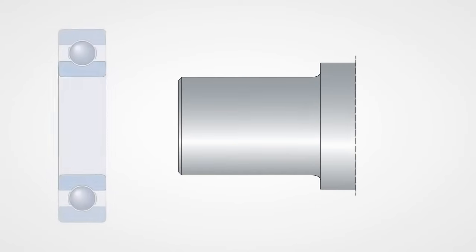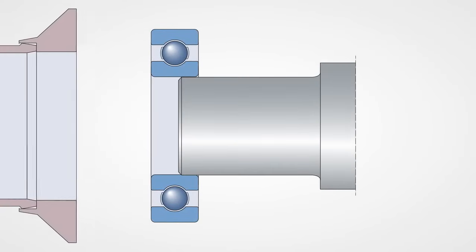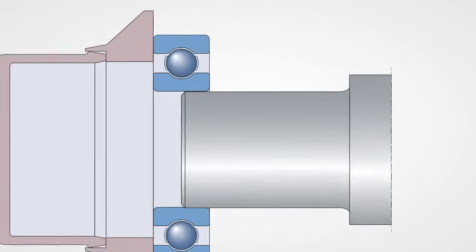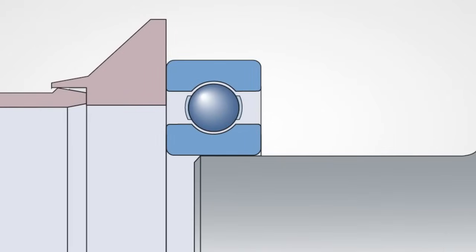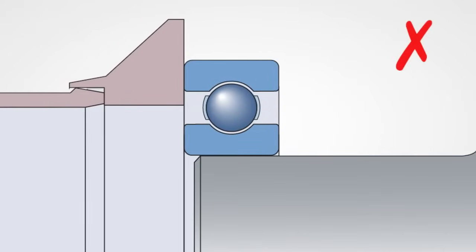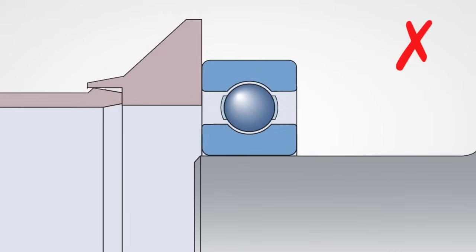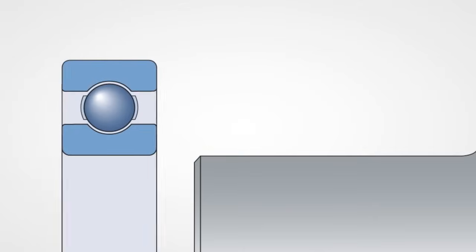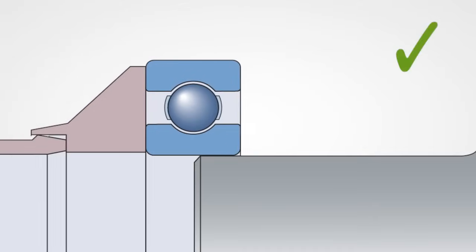When mechanically mounting deep groove ball bearings, damage to the bearing can occur if the mounting force is applied to the non-locating bearing ring, as this would allow the shock load to be transmitted through the rolling elements. The force must always be applied to the ring with the interference fit.